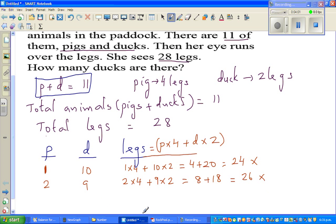So if you take 3 pigs, you will have how many ducks? 8 ducks. So using this formula, pigs times 4, which is 3 times 4, plus 8 times...